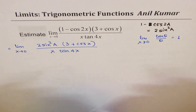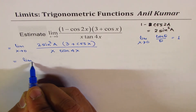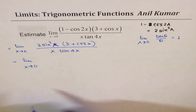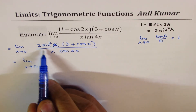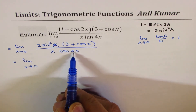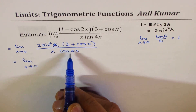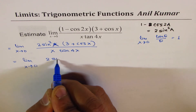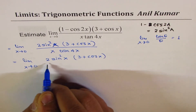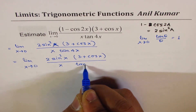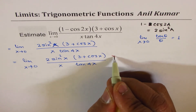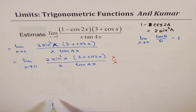So that becomes the equivalent expression. Now we have limit x approaches 0. We need x squared here so that the sin squared x term can be handled. And we need the number 4 there. So let me write down what we have: 2 sin squared x times 3 plus cos x, over x times tan 4x. We need x squared here, so let me multiply and divide by x — that will make this x squared.